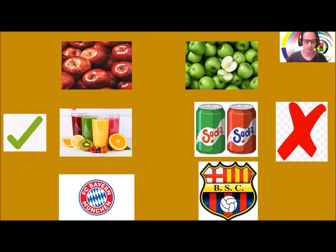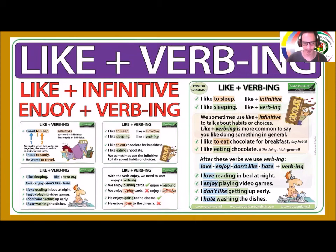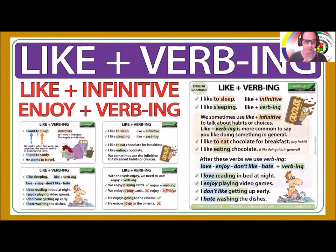Now, like more with the verb + -ing form. We have the way to express likes using the infinitive form or the verb with -ing. For example: I want to sleep — forma infinitiva. I want sleeping — con el -ing. Both can work. I like sleeping, I love sleeping, I love reading at night, I enjoy playing video games.